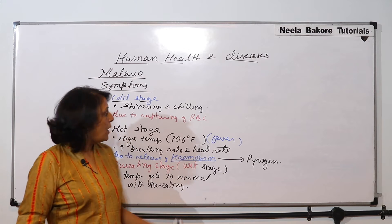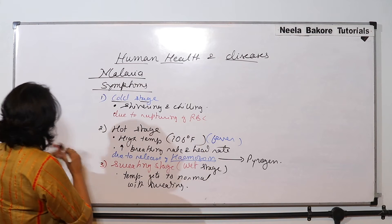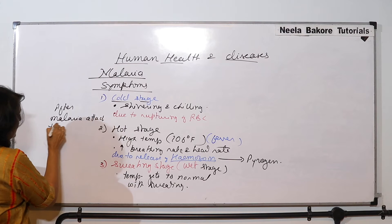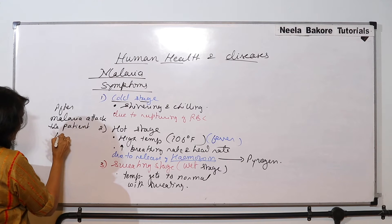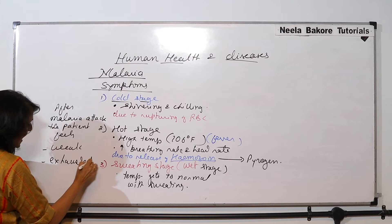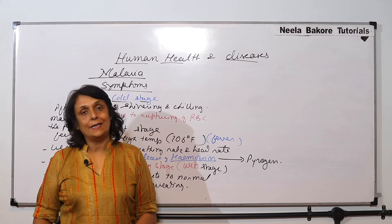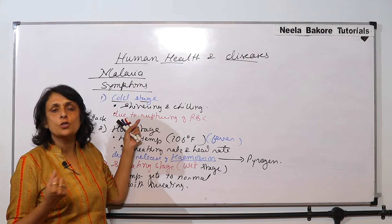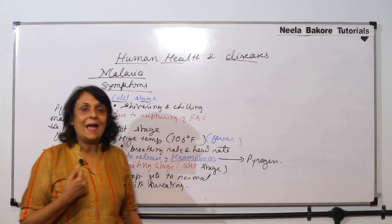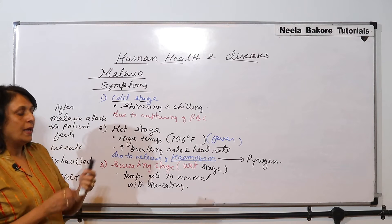After the malarial attack, the patient feels weak, exhausted, and anemic. These are the common complaints after the attack of malaria. The reason is too much cold and hot fluctuation — when temperature rises, the breathing rate goes up, the heart rate goes up, and RBCs are rupturing. RBC rupturing results in anemia.